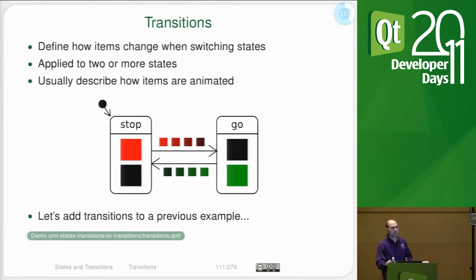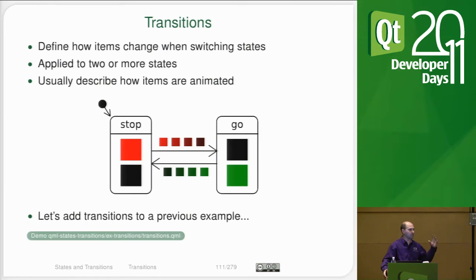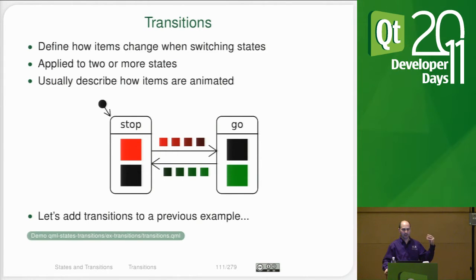We have the ability to simply make changes — change the stop light from black to red. However, users expect a more realistic environment. They don't want the stoplight to teleport from red to black; they want to see it fade, like the light is going out. The red stoplight should fade to black and the black go light should fade into green.